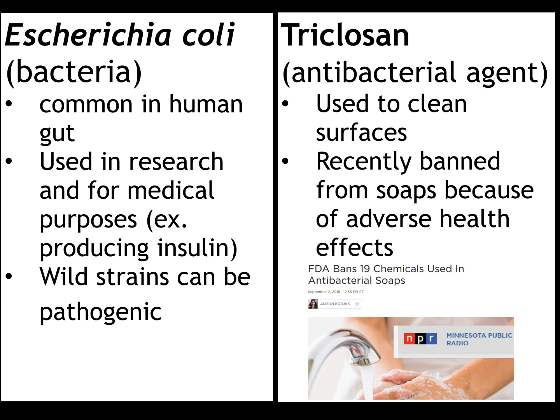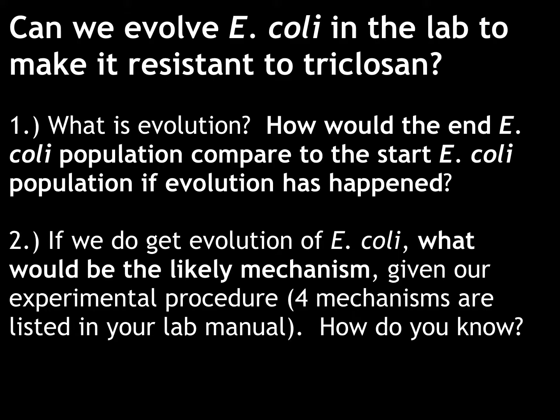Triclosan is the antibacterial agent that we will be working with this week in lab. It is used to clean surfaces, and it was recently banned from soaps because of adverse health effects. Our question this week in lab is going to be: can we evolve E. coli in the lab to make it resistant to Triclosan, the antibacterial agent?